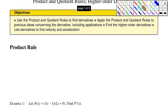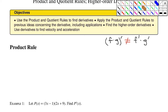The product rule comes about because you cannot just take the derivative of each function in a product and then multiply them together. So if you had a function that was f times g and you wanted to take that derivative, this is not equal to the derivative of f times the derivative of g. They do not work that way — this is what not to do.